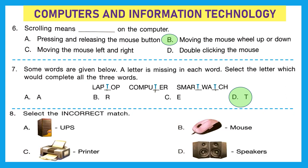Question 8: select the incorrect match. Option A is UPS — Uninterruptible Power Supply — a device that allows a computer to keep running for a short time when there is a power disruption. B is mouse, C is printer, and D is speakers, which are all peripheral devices. UPS is the one which is the incorrect match as it is not a peripheral device. Our answer is option A, UPS.